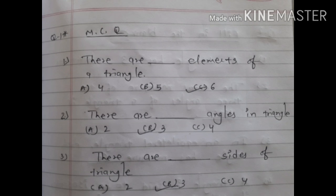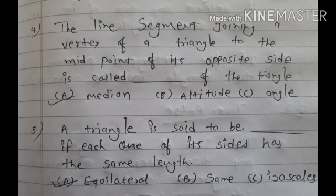Next multiple choice questions. First: There are dash elements of a triangle — triangle के total 6 elements होते हैं: 3 sides and 3 angles. Second: There are dash angles in a triangle — 3. Third: There are dash sides of a triangle — 3 sides. Fourth: The line segment joining the vertex of a triangle to the midpoint of its opposite side is called the median of the triangle. Fifth: A triangle is said to be equilateral if each one of its sides has the same length.